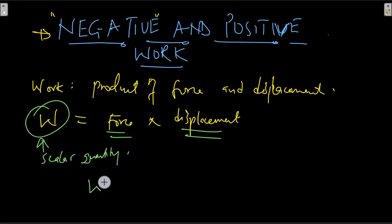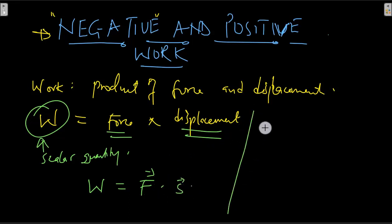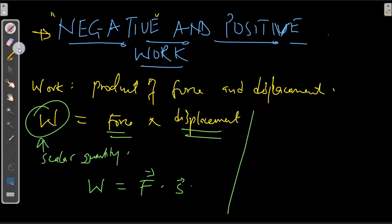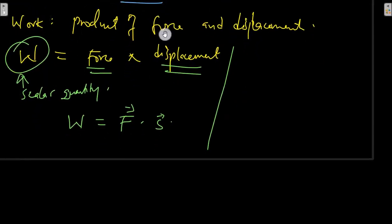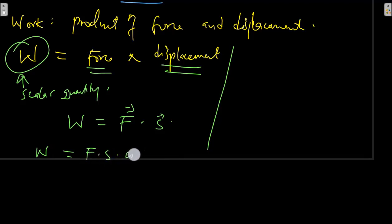Work is a scalar quantity, so in that case the work done is going to be the product of force as a vector times displacement as a vector — that means we have the scalar product. So that basically means work is equal to the magnitude of force times the magnitude of displacement times the cosine of the angle between the two vectors, the force and the displacement.